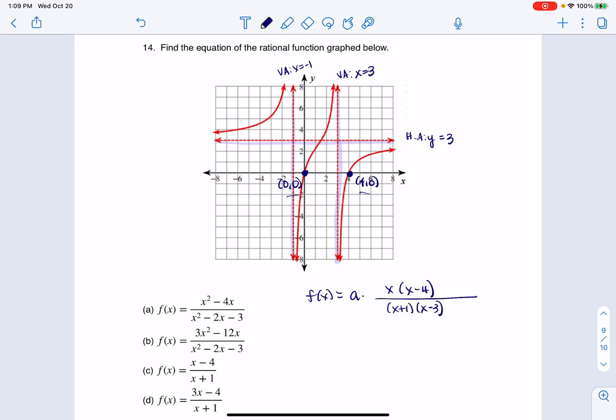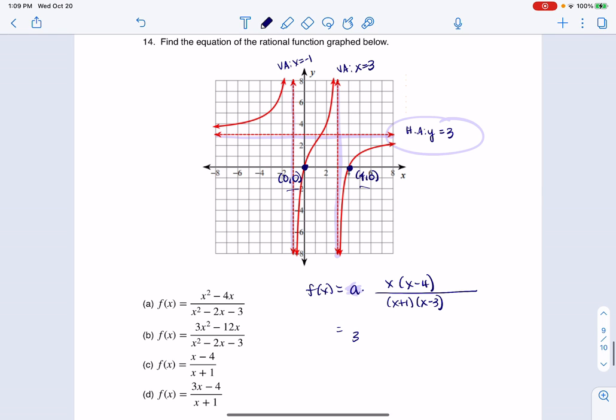The only thing I haven't taken into account as of right now is the horizontal asymptote of y equaling 3. And like I said, I need that multiplier then out here to be 3. So let's go ahead and swap that in. So we have 3x, x minus 4 over x plus 1 times x minus 3.